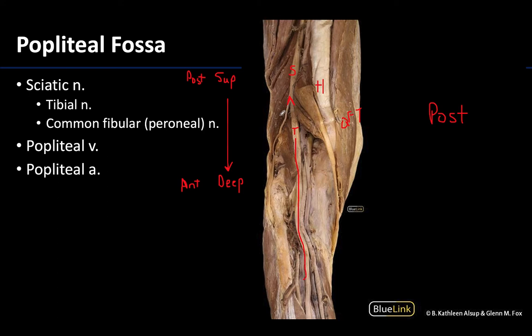The smaller and more lateral nerve is the common fibular nerve, often referred to as the common peroneal nerve — that will be the more lateral of the two terminal branches.